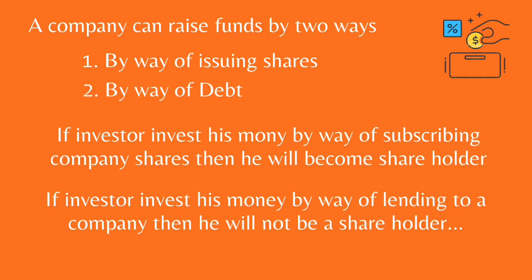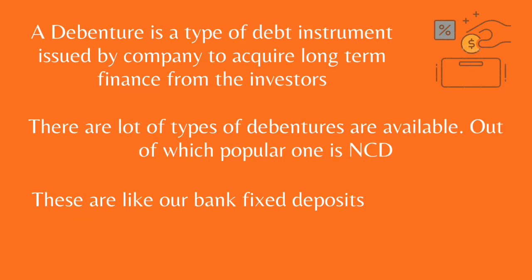If you lend money to a company, the company will issue a certificate — that certificate is called a debenture. The company promises to pay a certain amount at a fixed rate of interest. These are like bank fixed deposits but are risky instruments that provide higher yield than others.